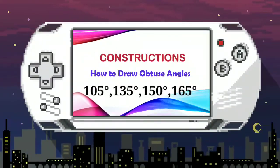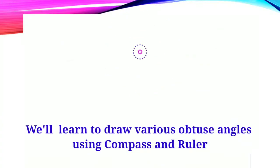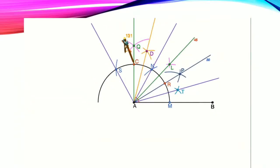Hello, my dear children. Today in constructions we are going to learn how to draw various obtuse angles using compass and ruler. If you remember, in the last video we learned various acute angles. So let's begin with 105 degrees.